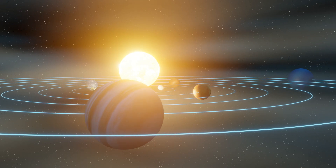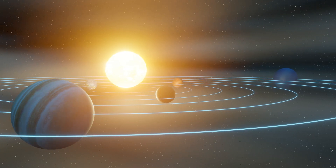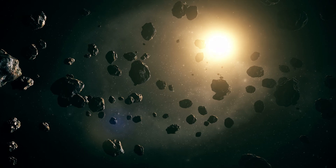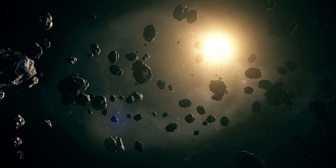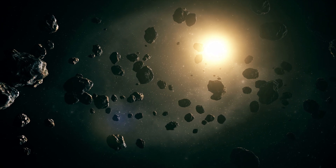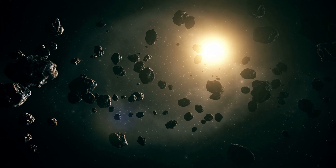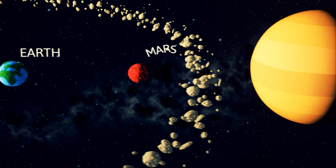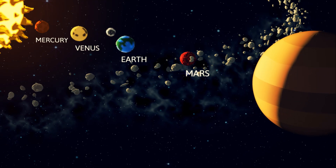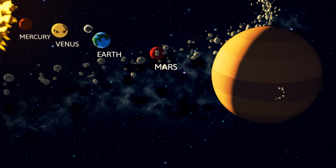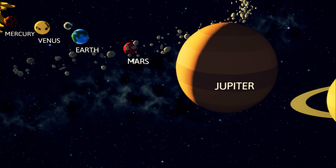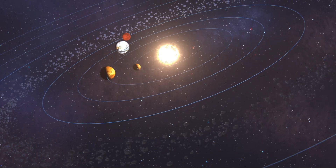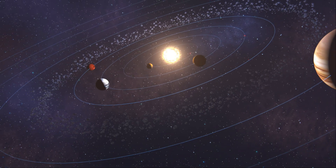The disturbances of this planet are formed as a gravitational attraction. Between Mars and Jupiter, this planet is formed as a belt. This belt is called the Asteroid Belt.